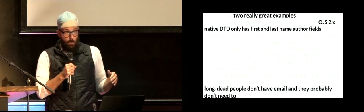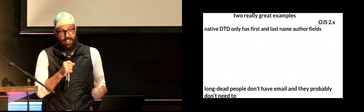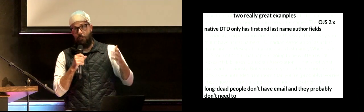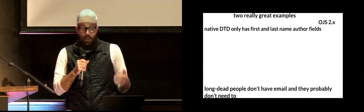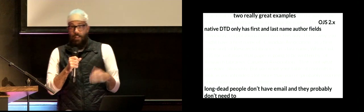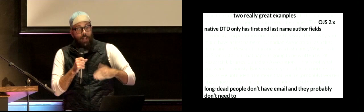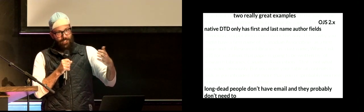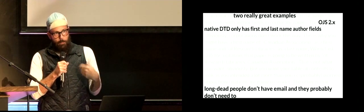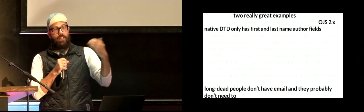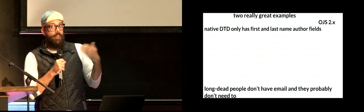There are two really great examples in OJS2, and there are obviously changes in version 3. One is that the OJS2 Native DTD only has first and last name author fields. First of all, this is sort of culturally insensitive — it presumes that everybody has a first and last name. Secondly, it means that people write things like 'the editors' as authors, or under first name 'the Canadian' and then last name 'Library Association.' So that generates a citation that says 'Library Association, the Canadian,' which is really not appropriate. But what we've learned is that people don't really care about what the citation looks like — they care about what the table of contents looks like. They're more worried about the look because they came from a print world, and that's their priority.